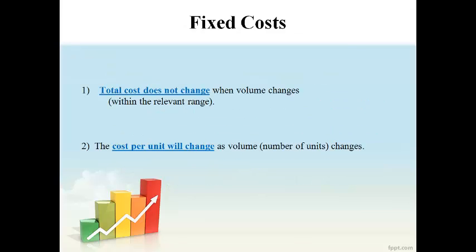Fixed costs behave opposite of variable costs. The total amount of fixed costs does not change as volume changes, as long as the quantity of production remains in the relevant range. The relevant range is the range of the number of products that can be produced or sold without increasing or decreasing fixed costs. When the total remains the same and the volume changes, the cost per unit will change proportionately.